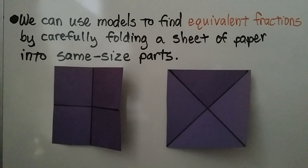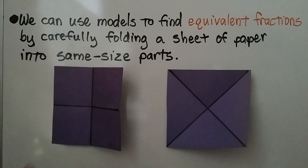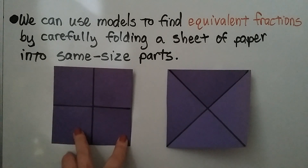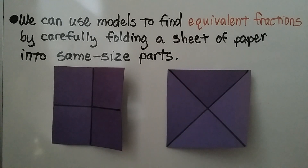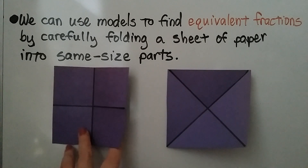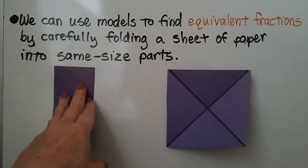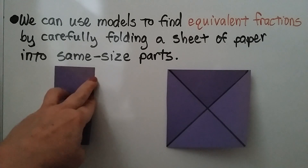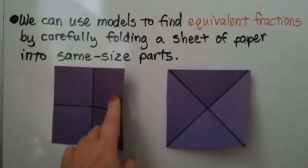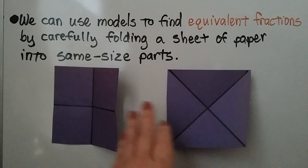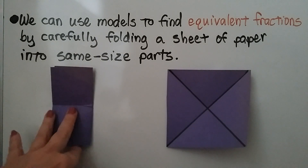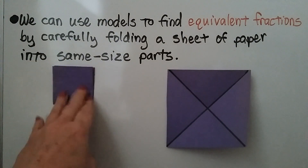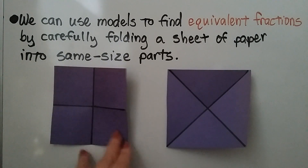We can use models to find equivalent fractions by carefully folding a sheet of paper into same-size parts. We can take a piece of construction paper like this, or just regular white school paper, and we can fold it in half carefully so that the corners line up very nicely. Then we have a half and a half. If we fold it in half and then fold it in half again, we'll make fourths.